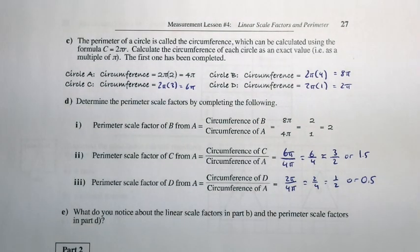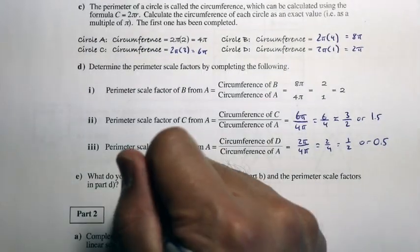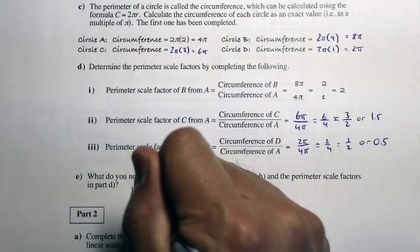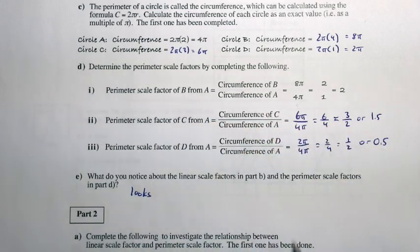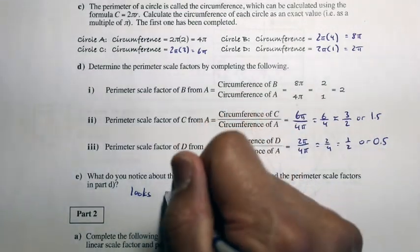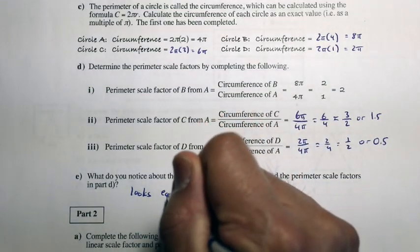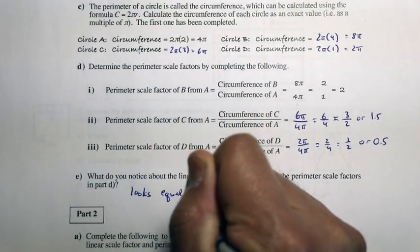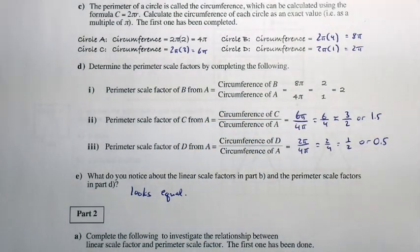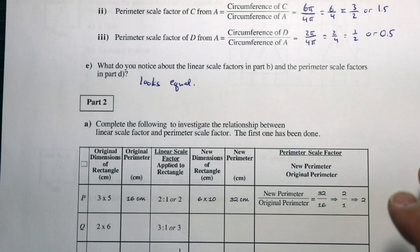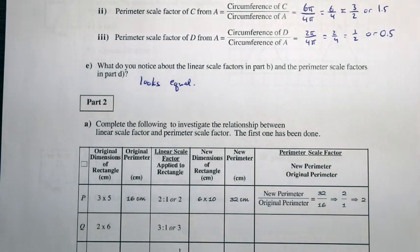What do we notice about the linear scale factor and the perimeter scale factor? They look equal. Let's move to Part 2 and complete a chart to further investigate the relationship between the linear scale factor and the perimeter scale factor.